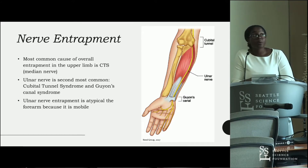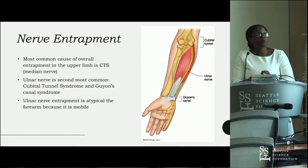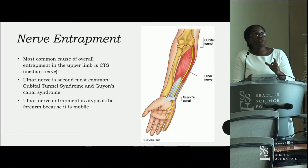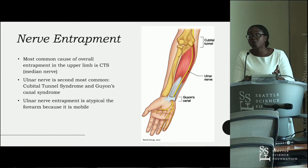The two most common ulnar nerve entrapments occur in the cubital tunnel and within Guyon's Canal. Ulnar nerve entrapment within the forearm itself — between these two boundaries — is quite atypical because in the forearm this nerve is very mobile.